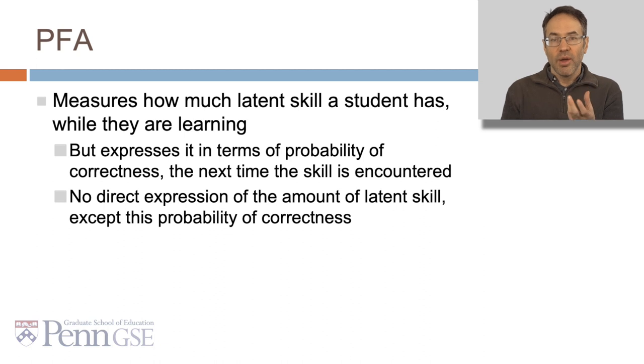PFA measures how much latent skill a student has while they're learning, but expresses it in terms of probability of correctness the next time the skill is encountered. Within PFA, unlike BKT, there's no direct expression of the amount of latent skill except that probability of correctness, and that by the way is true of the entire LKT family.